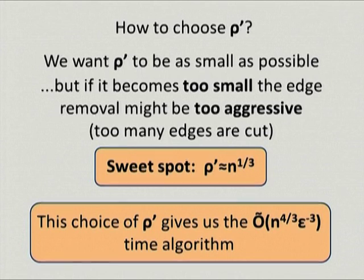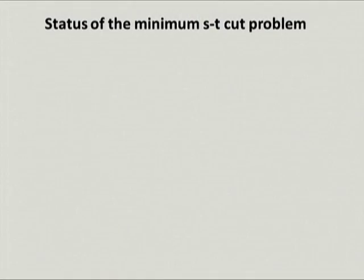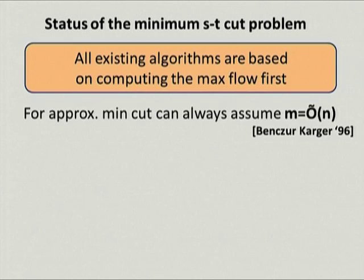Let me wrap up by saying a few words about the minimum ST-cut problem. There is a tight connection between maximum flow and minimum ST-cut: we can use the maximum flow to get the minimum ST-cut. All previous algorithms for minimum ST-cut are based on running maximum flow and then using the procedure I described to obtain the minimum ST-cut. As a result, the landscape for minimum ST-cut is essentially the same as for maximum flow. The only difference is that for minimum ST-cut, we can always assume the graph is sparse without loss of generality, using the beautiful cut sparsifier construction of Benczúr and Karger.